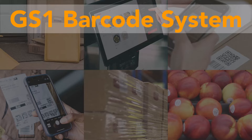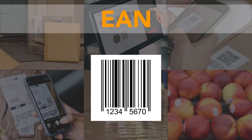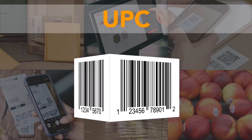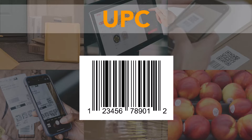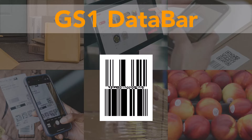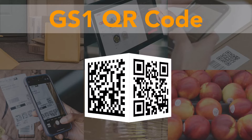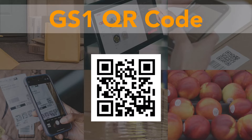In the GS1 system, various barcode types are used to encode information depending on the application. These include EAN, UPC, ITF-14, GS1-128, GS1 Data Bar, and the 2D codes GS1 Data Matrix and GS1 QR Code.